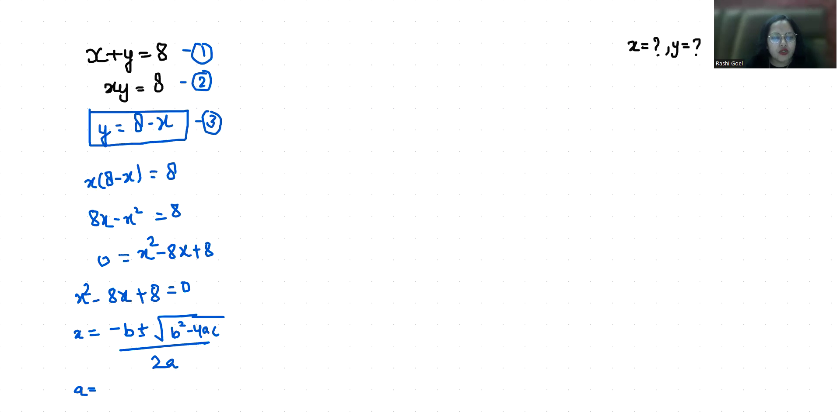So x equals minus negative 8 plus minus square root of negative 8 squared minus 4 times 1 times 8, all over 2 times 1.